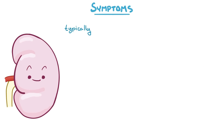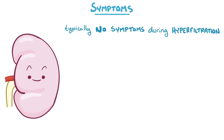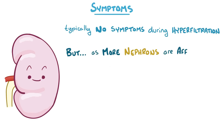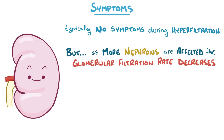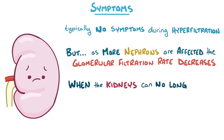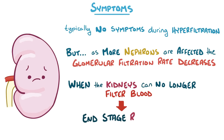Diabetic nephropathy starts quietly, with no symptoms during the hyperfiltration phase. But over time, as more and more nephrons are affected, the kidney becomes less and less effective at filtering the blood, and the glomerular filtration rate decreases dramatically. Once the kidneys can no longer do their job, a person enters end-stage renal disease.